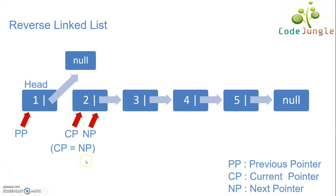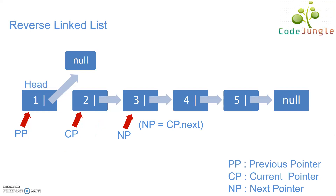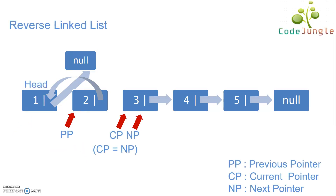In the second iteration, as current pointer is not equal to null, the next pointer will again point to the current pointer's next node, and current pointer's next will point to the previous pointer. As a conclusion after the second iteration, the second node is pointing to its previous node which is node 1, which in return points to null, and the second node is no more pointing to the third node.